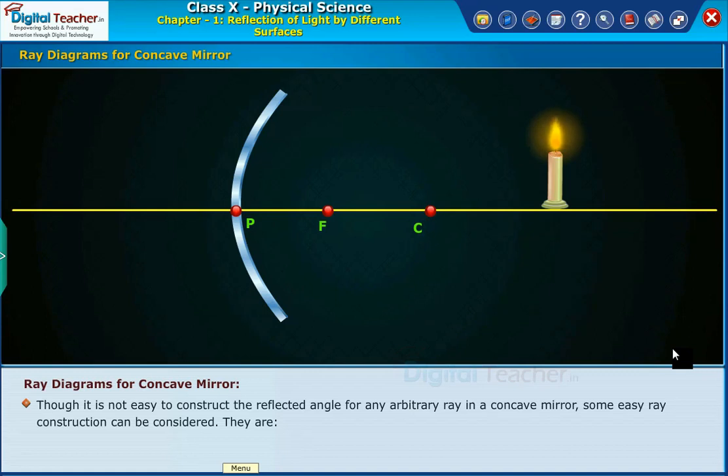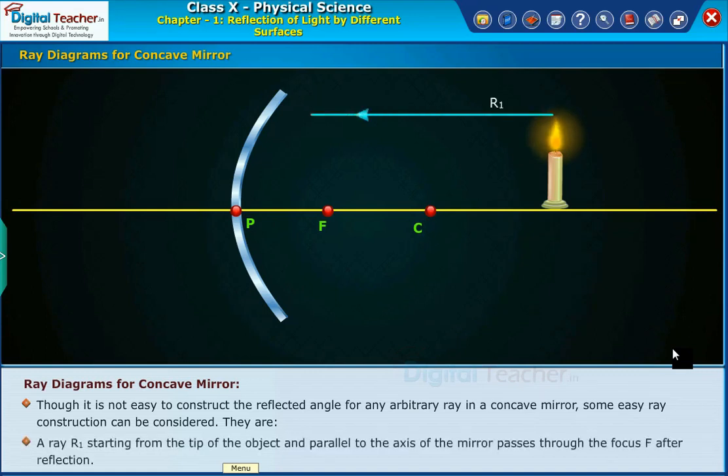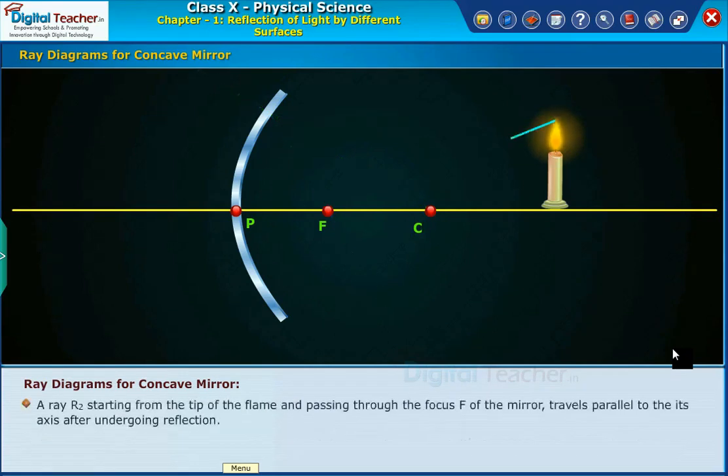They are: a ray R1 starting from the tip of the object and parallel to the axis of the mirror passes through the focus F after reflection. A ray R2 starting from the tip of the flame and passing through the focus F of the mirror travels parallel to its axis after undergoing reflection.